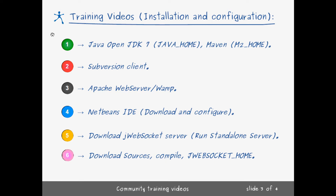We have a series of different videos separated into different points. We will show you how to install Java, OpenJDK, and export Java Home in a separate variable. We will install Maven, Subversion Client, Apache Web Server, and some other dependencies that will definitely be required for our jWebSocket server.